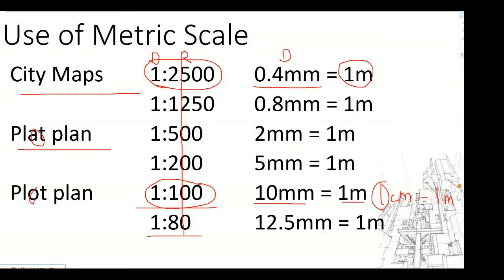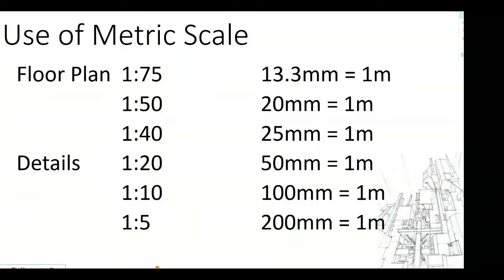For 1 is to 80, for every 12.5 millimeters, or 1.25 centimeters that you measure in the drawing, in reality that's equivalent to 1 meter. Or for every 1.25 centimeters, it's 1 meter in real life.